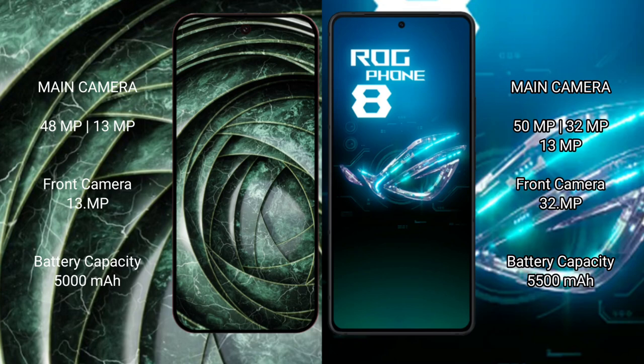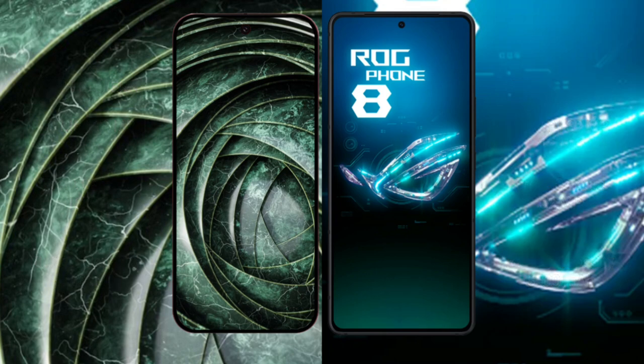The ASUS ROG Phone 8 features a triple camera setup with a 50MP main camera, plus a 32MP and a 13MP lens, and a 32MP front camera. The Google Pixel 9a has a 5000mAh battery with 18-watt fast charging support, while the ASUS ROG Phone 8 has a 5500mAh battery with 65-watt fast charging support.